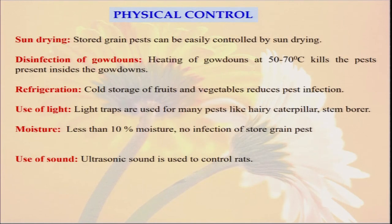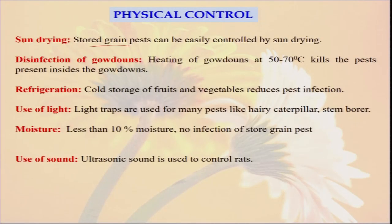Now, having discussed different types of cultural methods, let us discuss different types of physical control, since our chemical option is very limited in organic farming. Sun drying — there are lots of pests present in stored grain. If you keep your rice for one year and take it out, you see lots of small insects — these are called stored grain pests. But if we periodically sun-dry — maybe after one month, three months, or four months — for a full day in sunlight, lots of these insect pests are reduced.